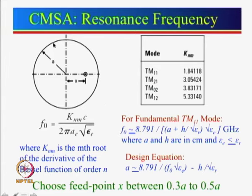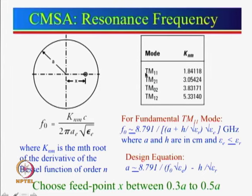For the circular patch, the variation is also sinusoidal along the circumference, but Bessel functions come into picture because the sin or cosine function gives rise to them. We need not worry too much about it because roots of the Bessel functions are available. We start with the fundamental mode TM11, then TM21, then TM12 at KNM = 5.33.